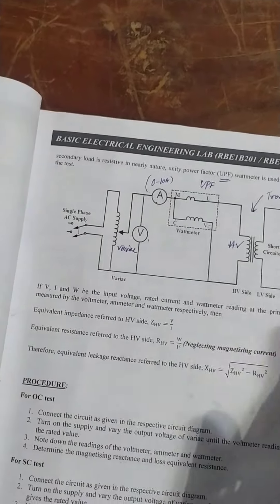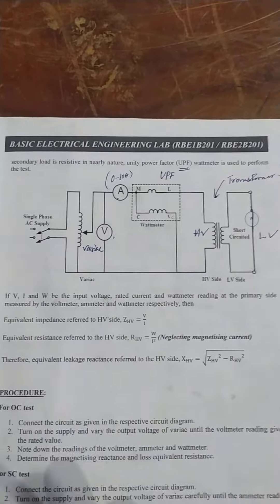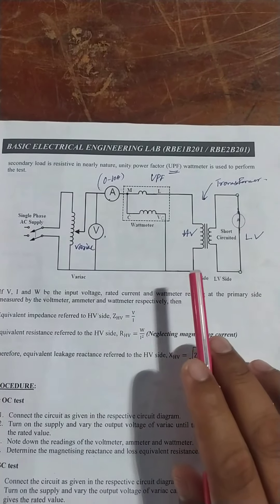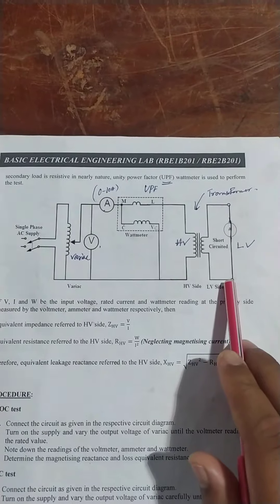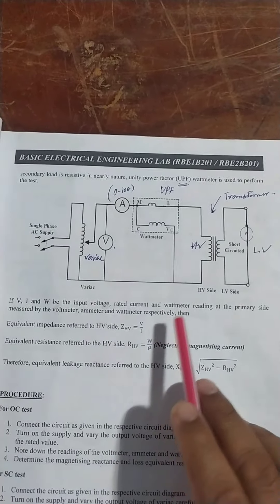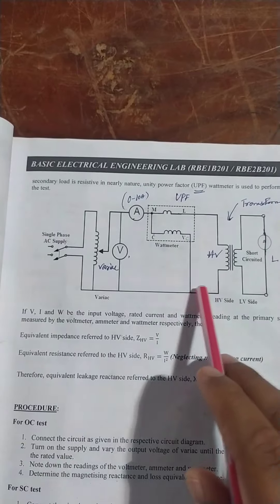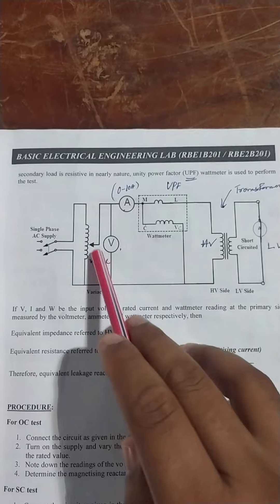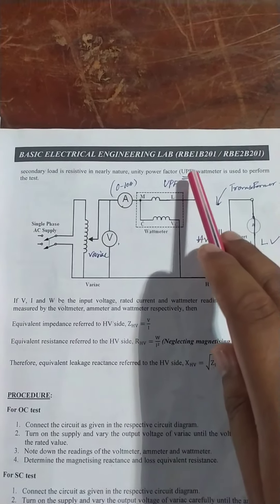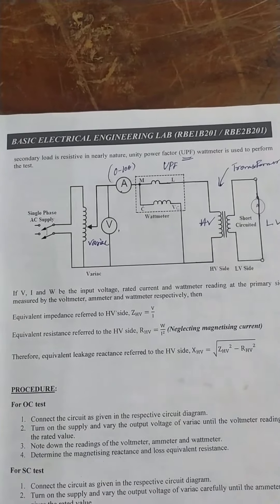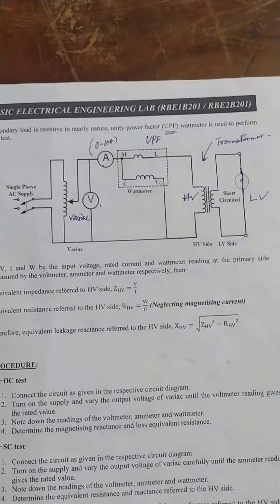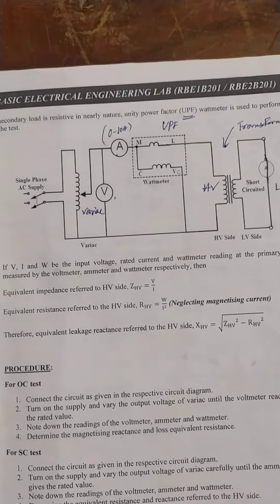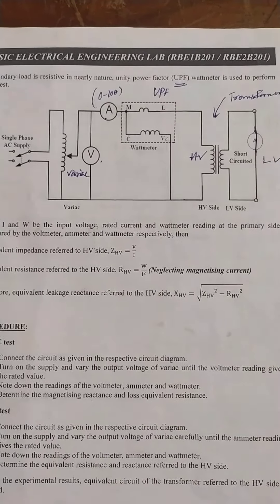Now moving to the short circuit test. The setup is similar, but here the LV side is short circuited — previously it was open circuited, now it is short circuited. On the HV side we connect the variac, voltmeter, ammeter, and wattmeter. In this case we use a UPF wattmeter because the power factor here is quite large compared to the previous test, where the power factor was about 0.2 to 0.3.